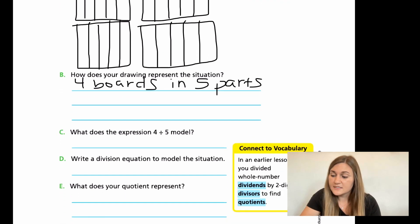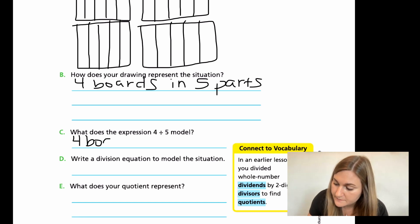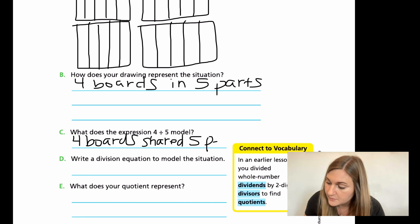So for C, what does the expression four divided by five model? Well, this is showing that I have four boards and they're being shared among the five students. So I have four boards being divided into five. So four boards shared with five people.